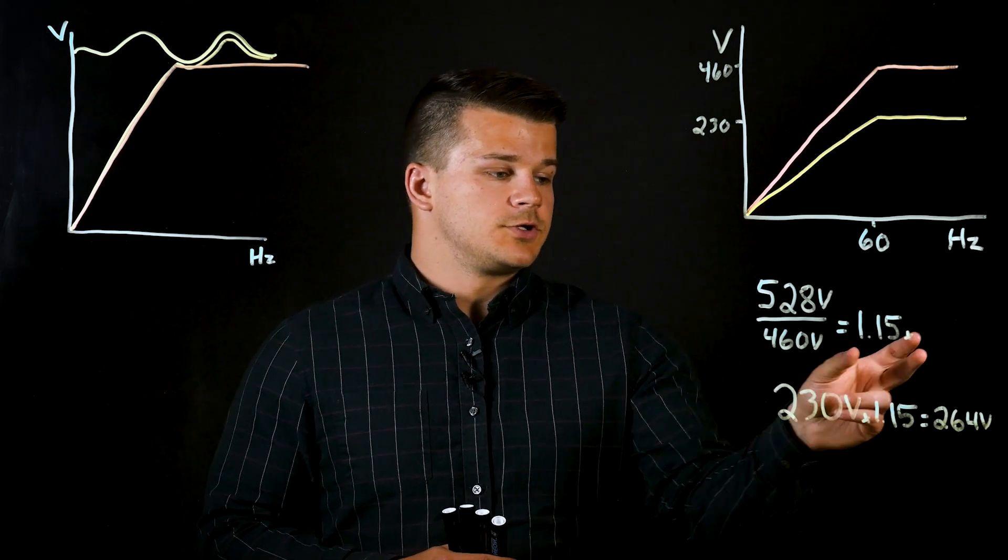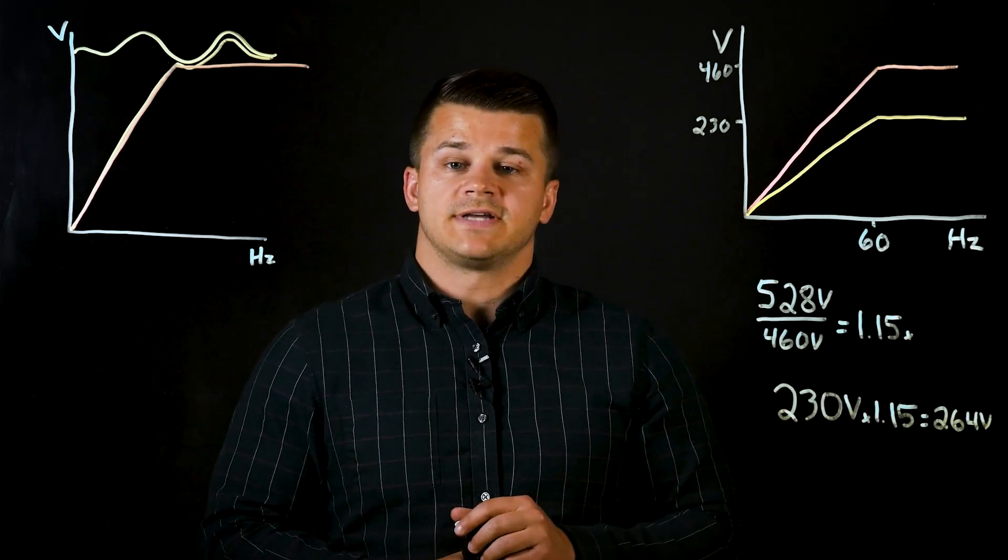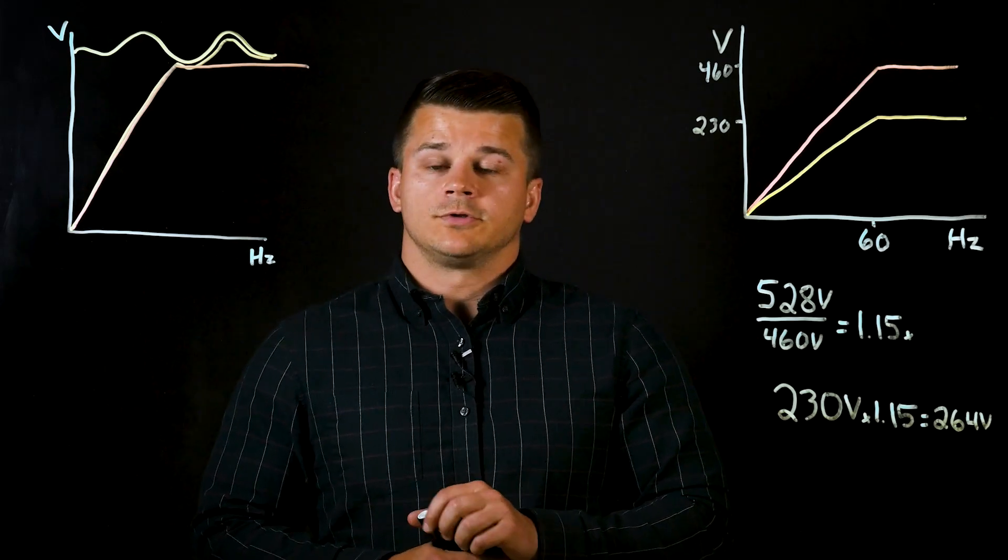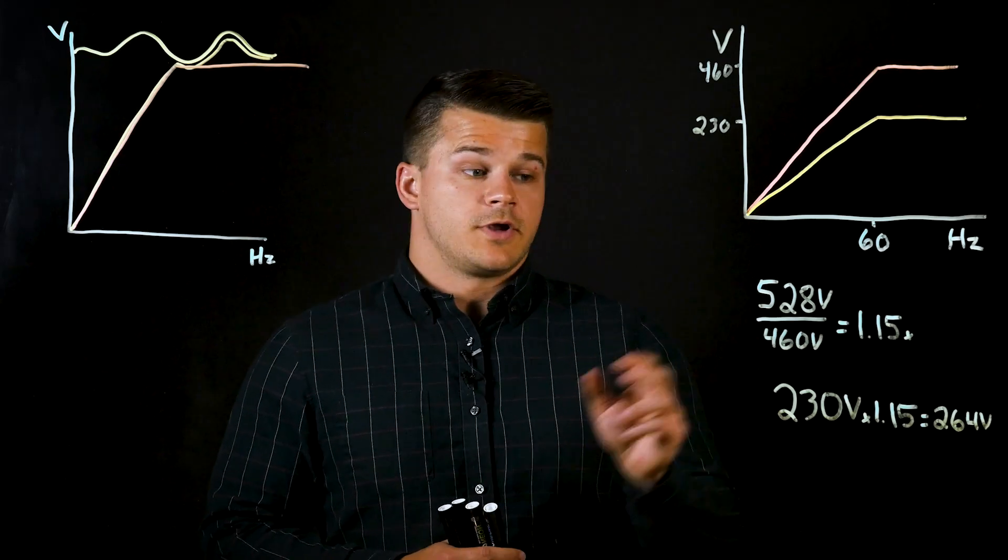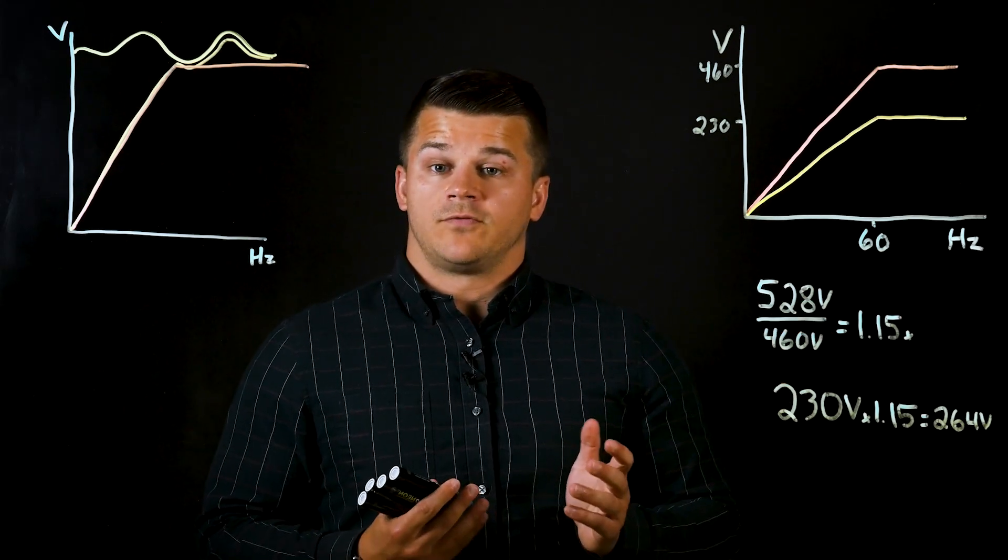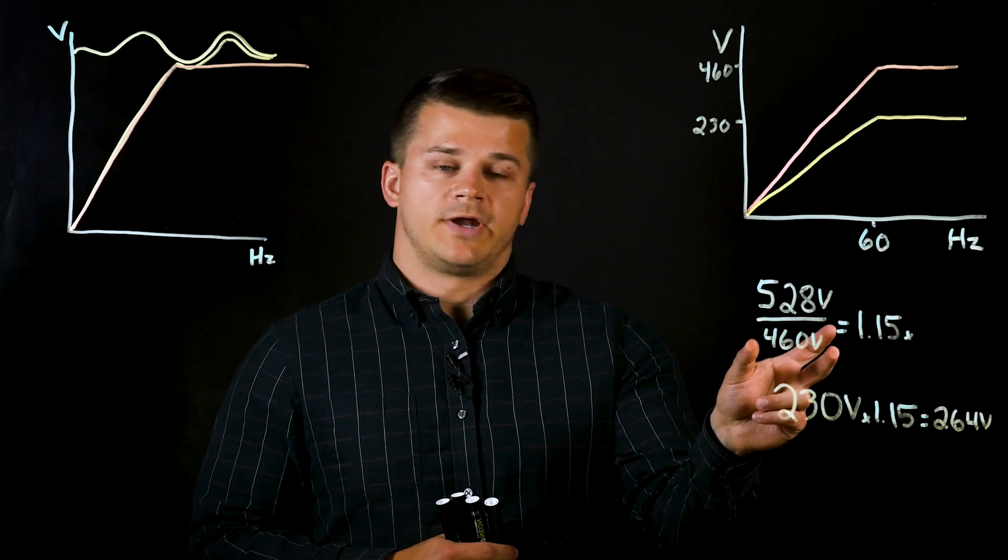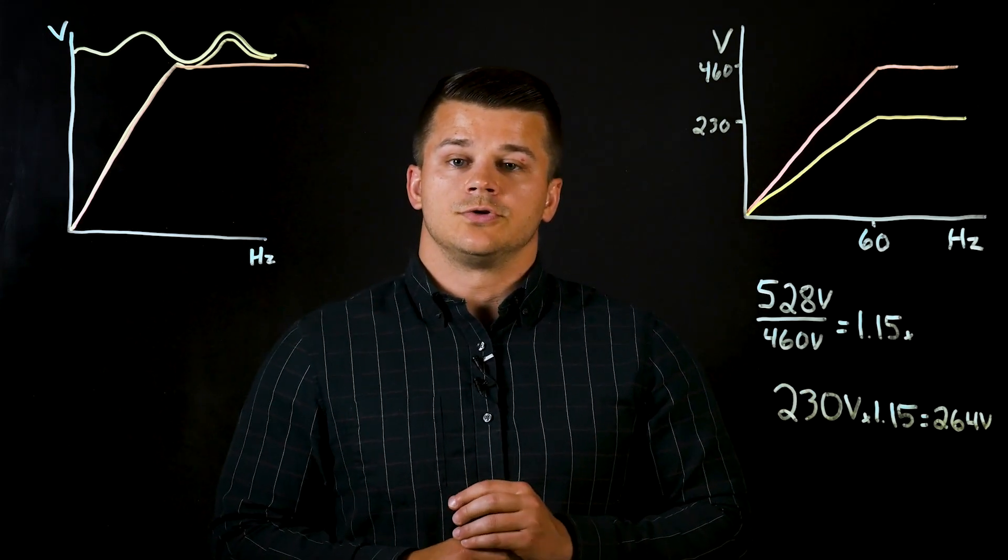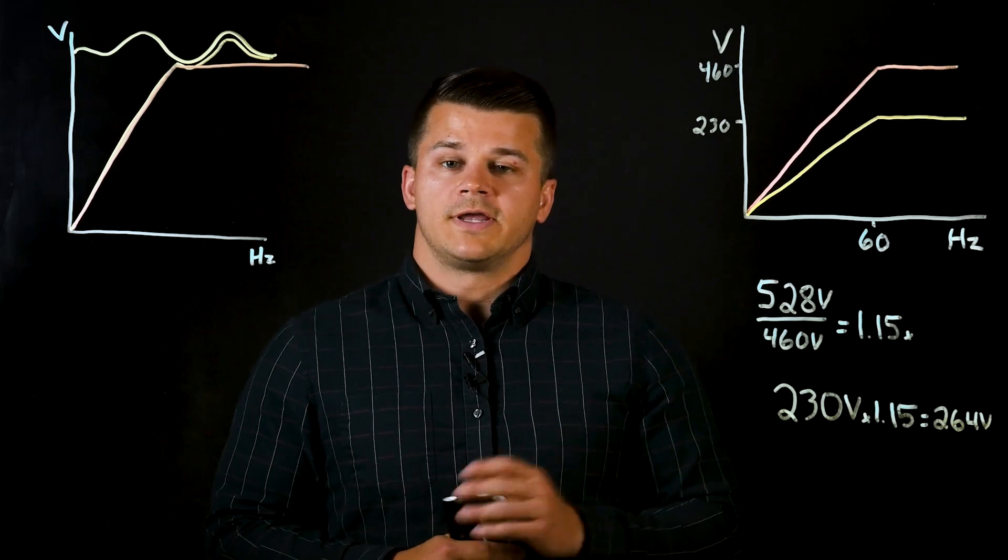So if we divide these two numbers you can get up to 1.15 times higher than the motor's rated voltage. So without the voltage stabilization function, if your input voltage reaches up to this 528 volts, the drive will simply be outputting that voltage to the motor rather than its rated 460 volts. This increased voltage can lead to premature failure and overheating of the motor.